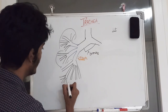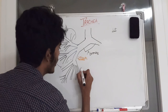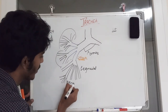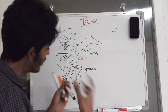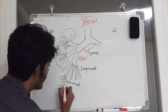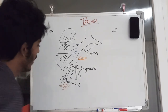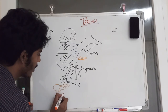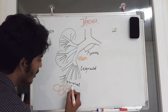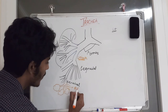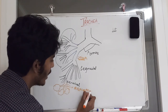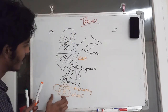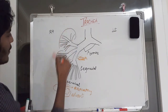After the segmental bronchi, they further divide into terminal bronchioles, and then into respiratory bronchioles. The respiratory bronchioles then form the alveoli. This progression from segmental bronchi → terminal bronchioles → respiratory bronchioles → alveoli occurs in every segment of the lung.